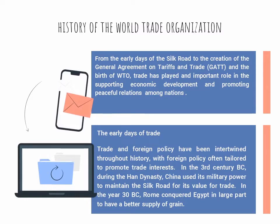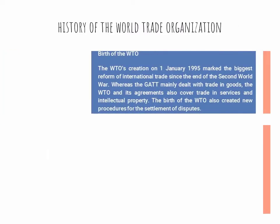In the year 30 BC, Rome conquered Egypt in large part to have a better supply of grain. The WTO's creation on the 1st of January 1995 marked the biggest reform of international trade since the end of the Second World War. Whereas GATT mainly dealt with trade in goods, the WTO and its agreements also covered trade in services and intellectual property, and created new procedures for the settlement of disputes.